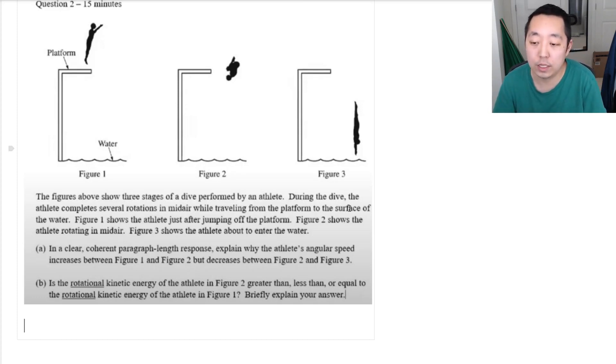And figure 2 shows the athlete rotating in mid-air. Figure 3 shows the athlete about to enter the water. In a clear, coherent, paragraph length response, explain why the athlete's angular speed increases between figure 1 and 2, but decreases between figure 2 and 3.